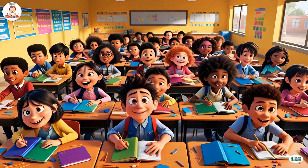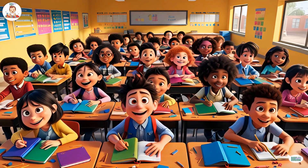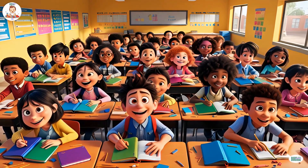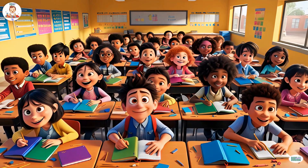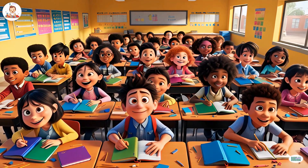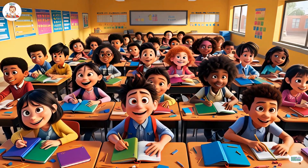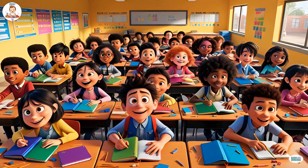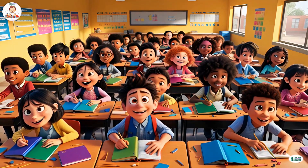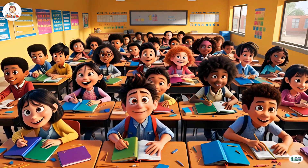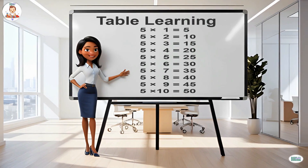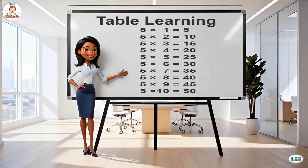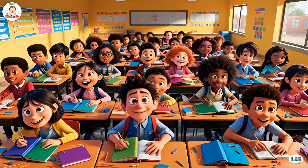Five ones are five, five twos are ten, five threes are fifteen, five fours are twenty, five fives are twenty-five, five sixes are thirty, five sevens are thirty-five.